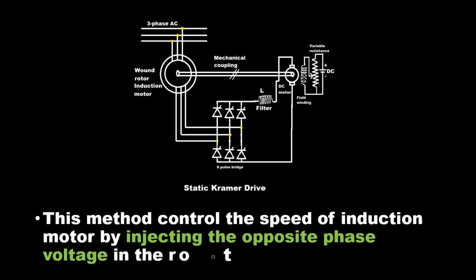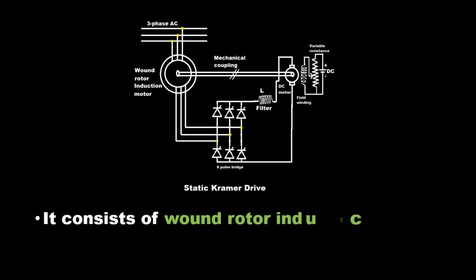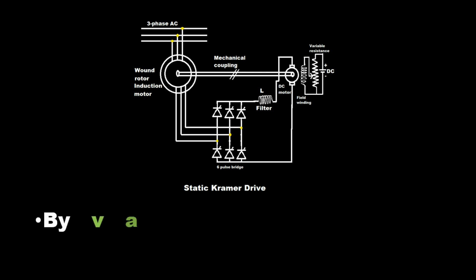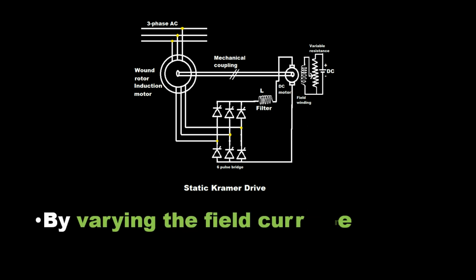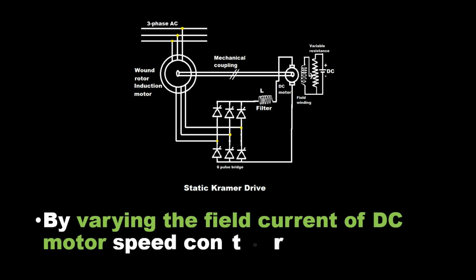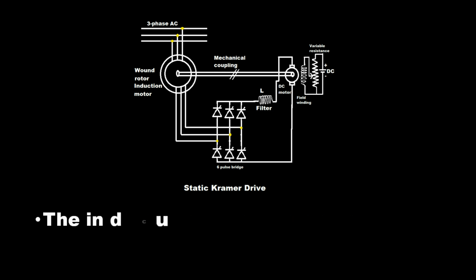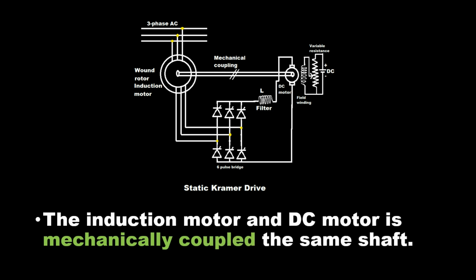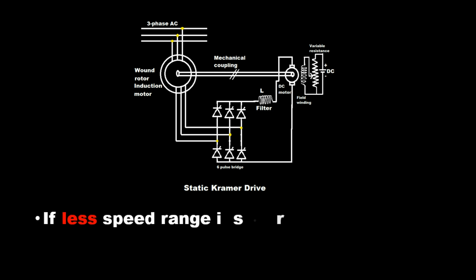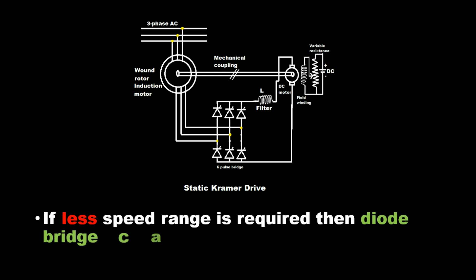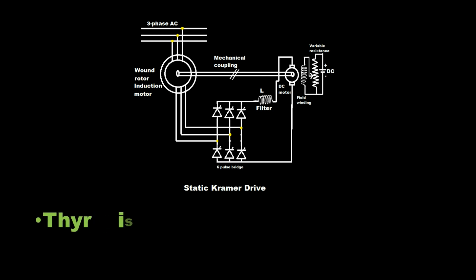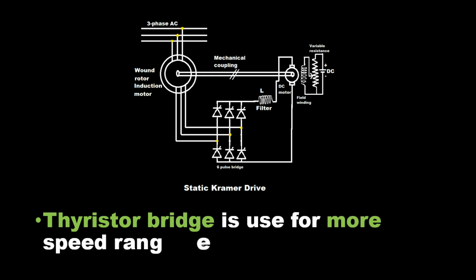This method controls the speed of the induction motor by injecting an opposite phase voltage into the rotor. It consists of a wound rotor induction motor, a smoothing reactor, a 6-pulse bridge, and a DC motor. Speed control is obtained by varying the field current of the DC motor. The induction motor and DC motor are mechanically coupled on the same shaft. If a smaller speed range is required, a diode bridge can be used in place of the thyristor bridge. A thyristor bridge is used for a wider speed range control.